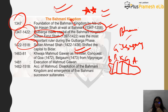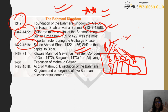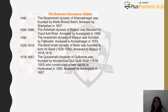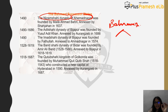Once the Bahmani Kingdom became weak, these five successor states came into existence. That is why the Bahmani Kingdom is important — questions can be asked but haven't been yet. The first successor state is Ahmadnagar, where the Nizam Shahi Dynasty ruled, founded by Malik Ahmad Bahri. It was later annexed by Shah Jahan in 1637.